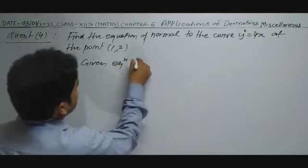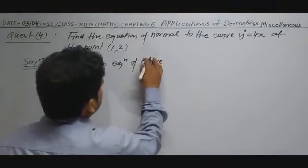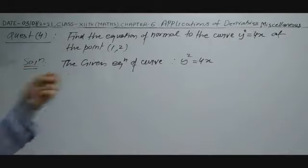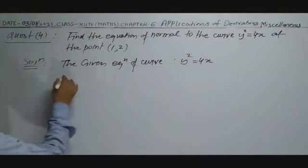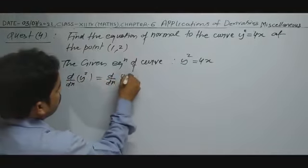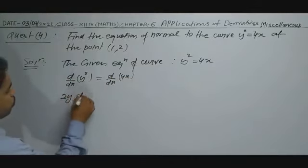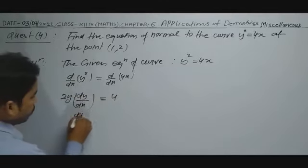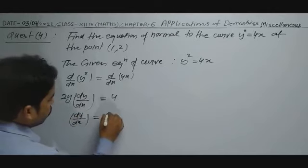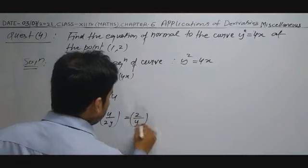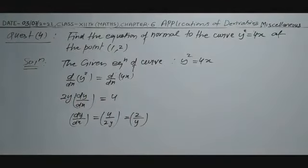The given equation of curve is y² = 4x. Now differentiating both sides: d/dx of y² = d/dx of 4x. This gives 2y dy/dx = 4, so dy/dx = 4/2y = 2/y. This is the slope of the tangent.